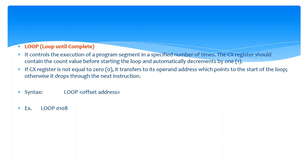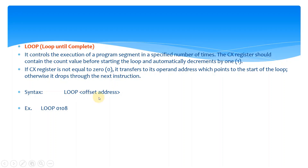The LOOP instruction controls the execution of a program segment a specified number of times. The CX register must contain the count value before starting the loop, and it automatically decrements by one each iteration — from a value down to zero. If CX is not equal to zero, it transfers to the operand address pointing to the start of the loop; otherwise it falls through to the next instruction. The syntax is: LOOP followed by the offset address, for example LOOP 0108.